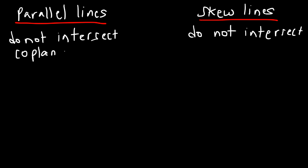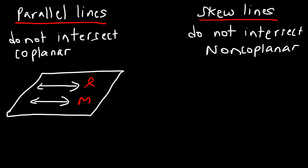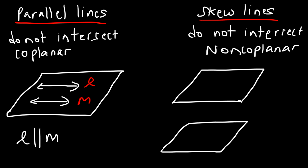Parallel lines exist in the same plane, while skew lines are non-coplanar lines — they exist in different planes. Here's an example of two parallel lines: it takes two parallel lines to determine exactly one plane. So let's say we have line L and M, where L is parallel to M.